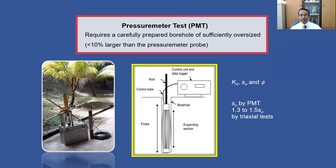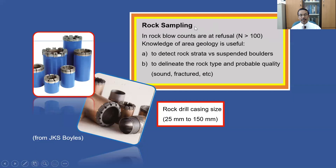Additional pressure is applied and more oil is pumped, causing further expansion and deformation to the surrounding soil. Based on the initial and final readings of pressure and volume, certain soil parameters can be estimated using correlations — such as K sub 0, the coefficient of lateral stress at rest; undrained shear strength of cohesive soil like clay; and internal friction angle of cohesionless material like sand. However, research shows that undrained shear strength from this method gives about 30% to 50% higher values than those obtained by triaxial test in the laboratory.